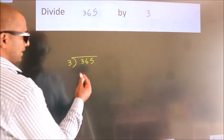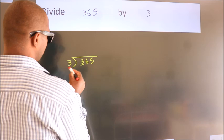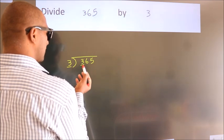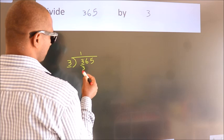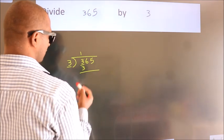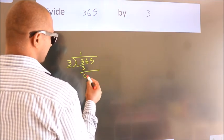Next. Here we have 3, here 3. When do we get 3? In 3 table, 3 ones 3. Now, we should subtract. We get 0.